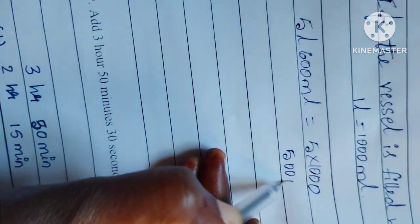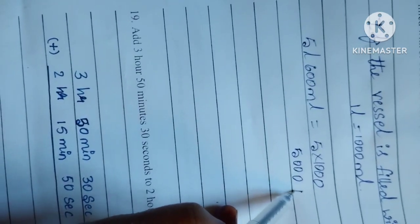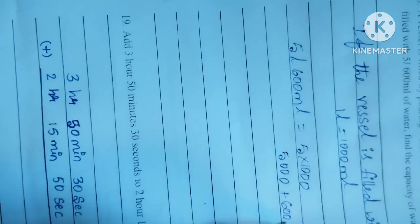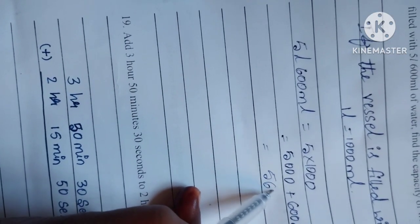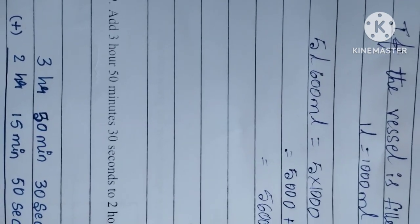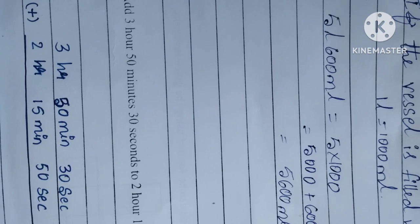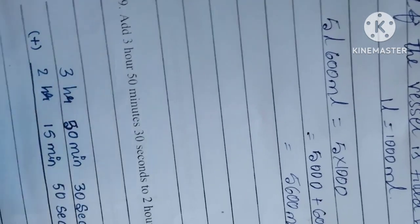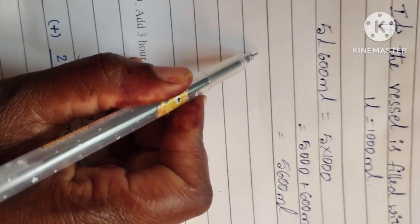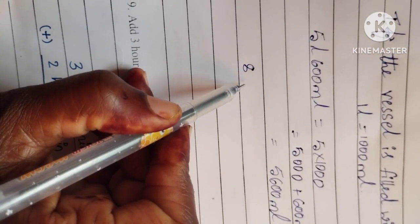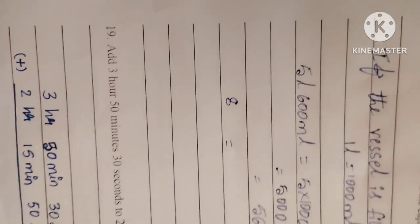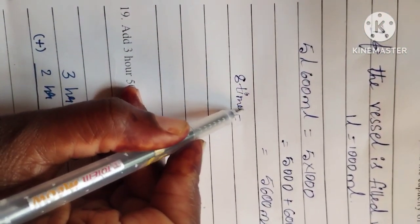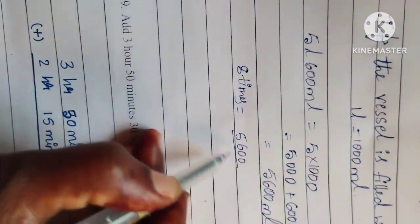5 into 1000 equals 5000, plus 600 ml, so that is 5600 milliliters. The vessel is filled 8 times, so divide 5600 by 8.